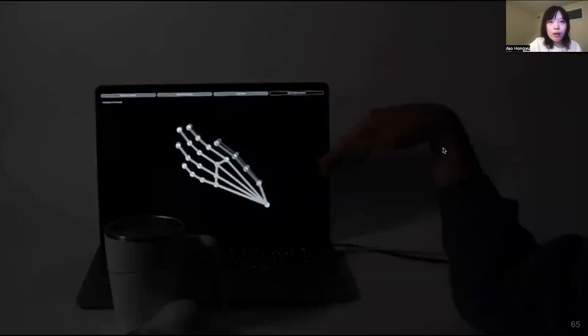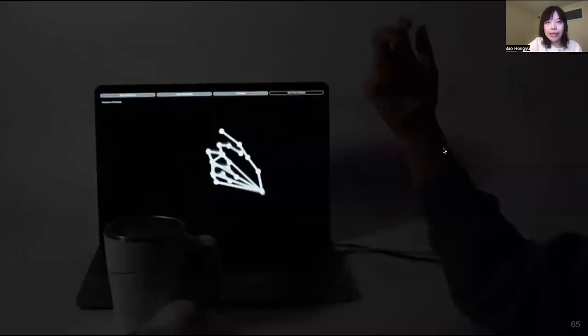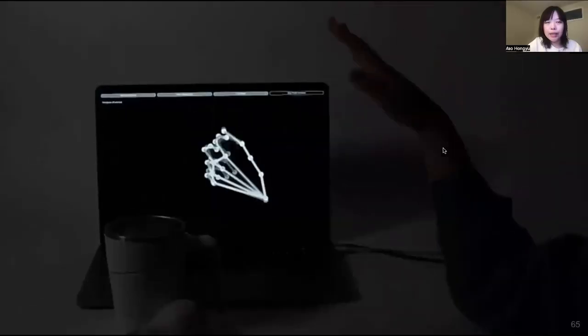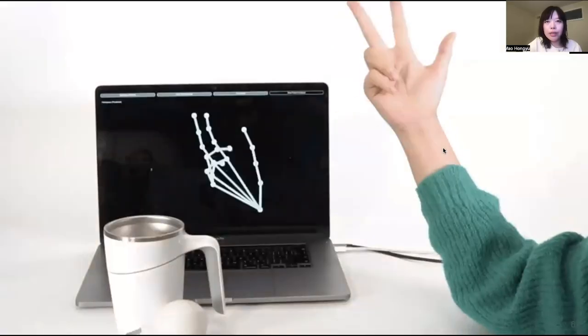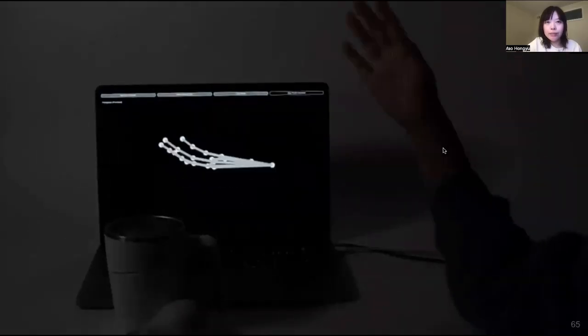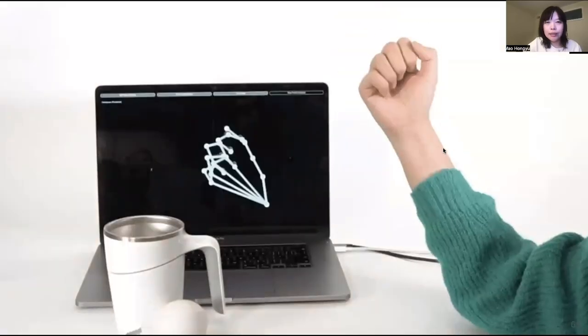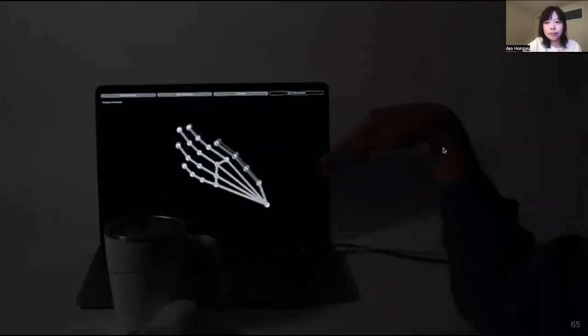In conclusion, we present EITPose, an indirect sensing approach for hand pose estimation that achieves similar levels of accuracy to other direct sensing methods, but with much lower power consumption and robustness under various conditions. Thanks for listening. For more information, please look into our paper.